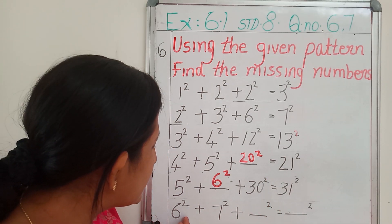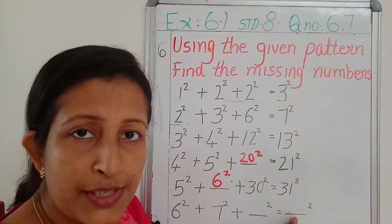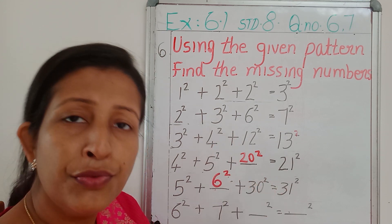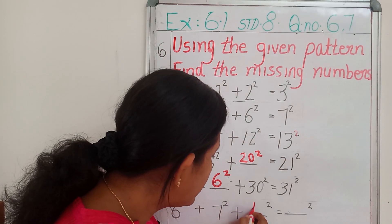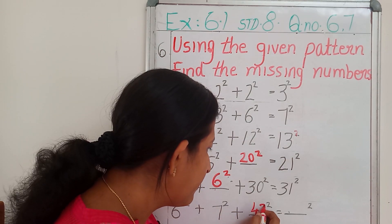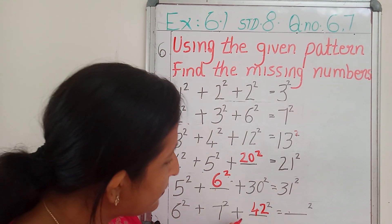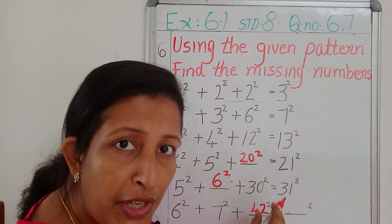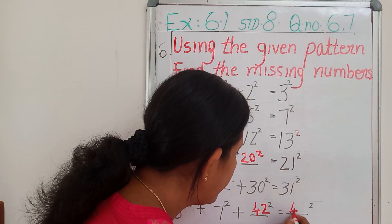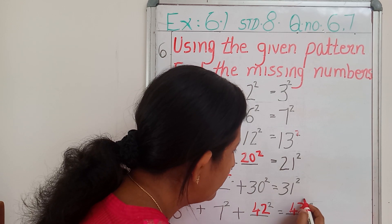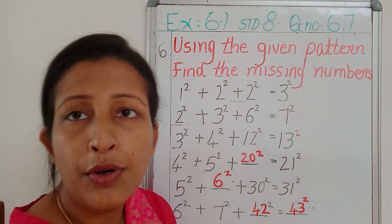Then the last one: 6 square plus 7 square plus dash square equals dash square. Here we have 2 blanks to fill. 6 into 7 is 42. So, 6 square plus 7 square plus 42 square equals 42 plus 1, that is 43 square. So we can conclude this problem.